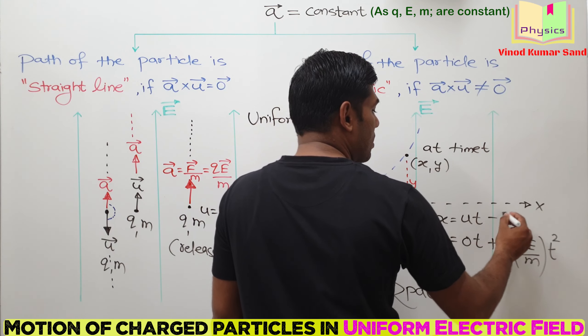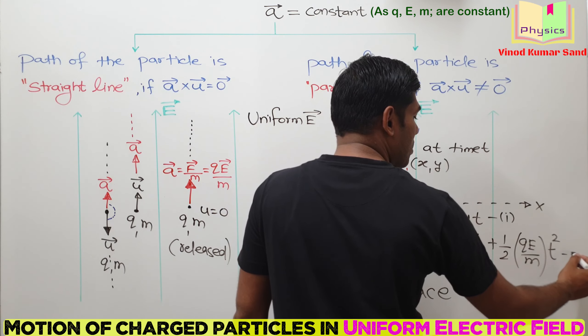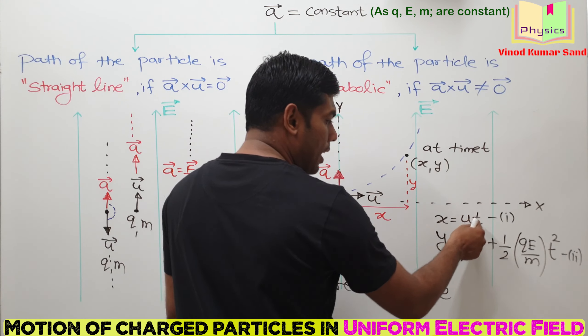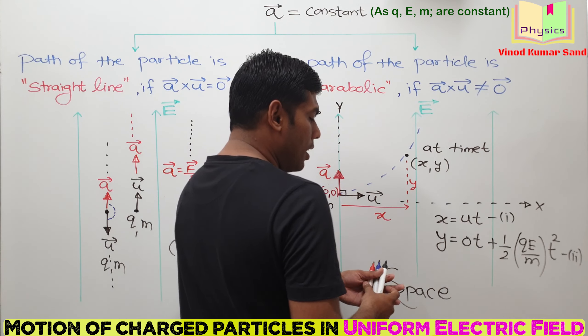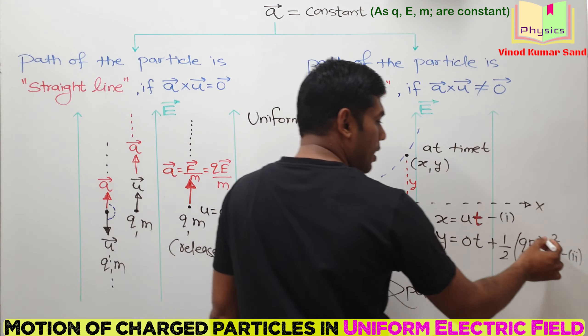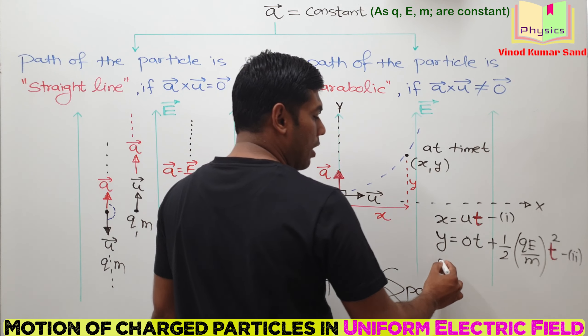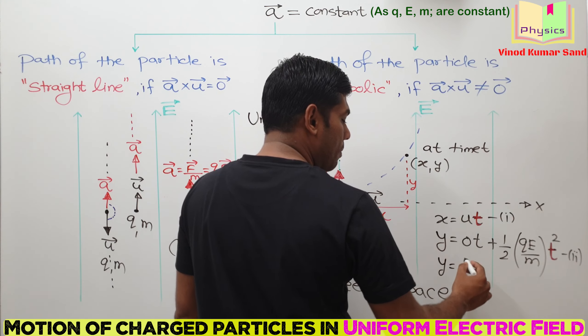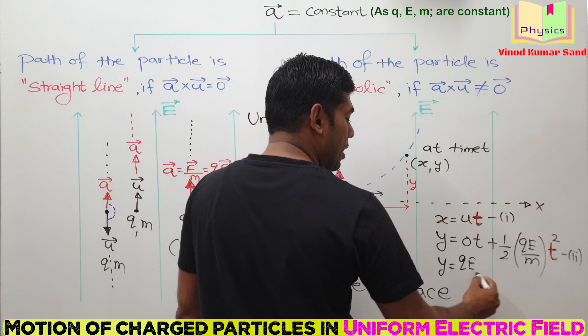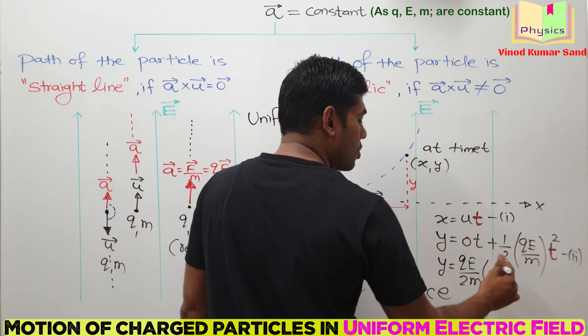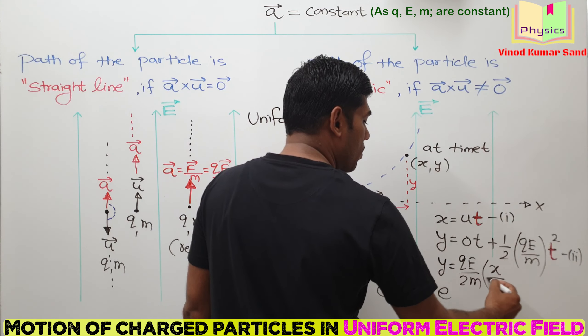From equation 1, can we submit the value of t in equation number 2? This t can be replaced here. So how will the expression of y look like? It will become QE by 2m multiplied with x by u whole square.